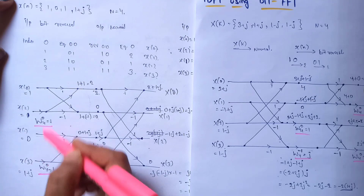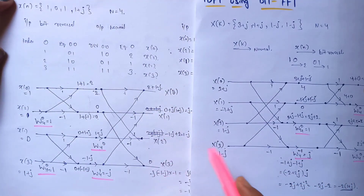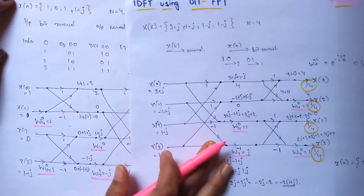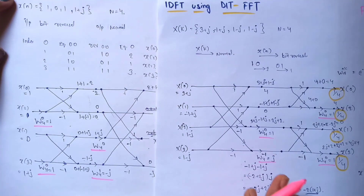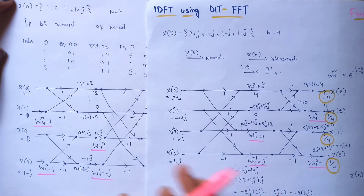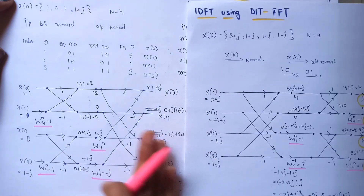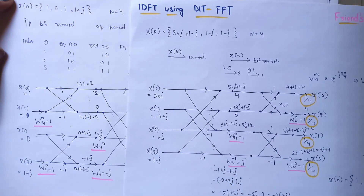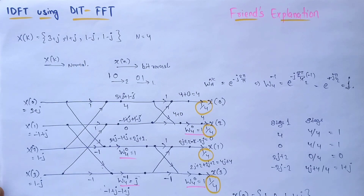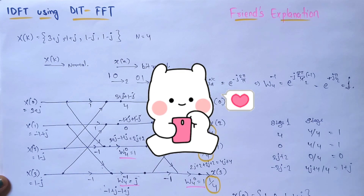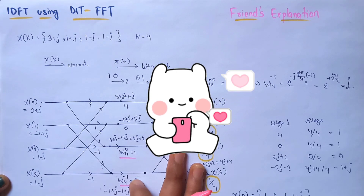In the DFT the input is in bit-reversal order and the output is in normal order. Correspondingly, in the IDFT the input is in normal order and the output is in bit-reversal order. That's the core relationship to understand. That's it for this video — I hope you understood everything I explained. Don't forget to check out the previous and next videos in this playlist. Thanks for watching!